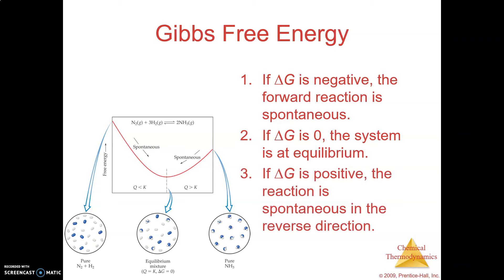If the reverse direction is spontaneous, that just means the forward reaction is not spontaneous. Because if something is spontaneous in one direction, it is non-spontaneous in the reverse direction. So really what we want to look at: delta G is negative means it's spontaneous forward; delta G is positive means the forward process is not spontaneous. Those are the signs to pay attention to in order to determine spontaneity.